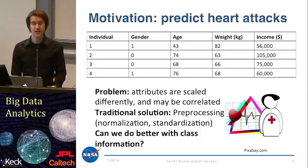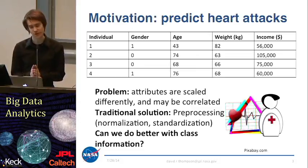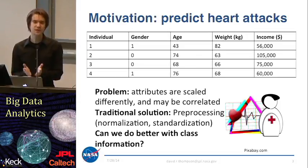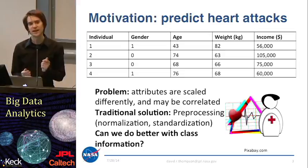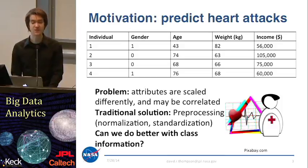Another related problem is that there may be correlations. As we add more features, there could be spurious correlations in the data set that make different attributes totally redundant with each other. Particularly for nearest neighbor methods and methods that rely on calculating distances within the attribute space, those are definitely going to be biased by the income attribute as opposed to some of the others that might actually be more relevant to the heart attack problem.